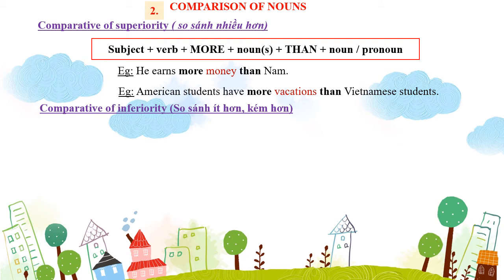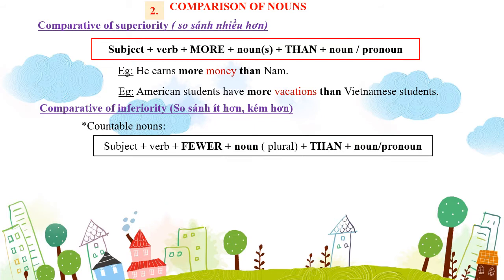Vậy more là danh từ không đếm được ở số ít và danh từ đếm được ở số nhiều, đi với cả 2. Ở so sánh ít hơn – Comparison of Inferiority – đối với countable noun (danh từ đếm được): S + verb + fewer + noun + than + noun/pronoun. Ví dụ: "She works fewer hours than workers." – Cô ấy làm việc ít giờ hơn công nhân. Chúng ta thấy sau "fewer" là "hours" – countable noun.